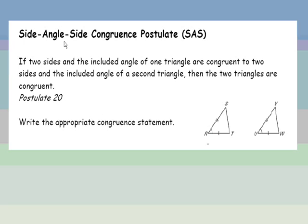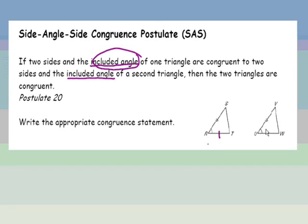Moving on to the side-angle-side congruence postulate. If two sides and the included angle of one triangle are congruent to two sides and the included angle of a second triangle, then those two triangles are congruent. The included angle is very important, because we also have a postulate that deals with an angle that's not included. From the diagram, you can clearly see a side congruent to another side, a second side congruent to a second side, and the angle in between the two sides — the included angle. So this diagram shows a side-angle-side congruence postulate.